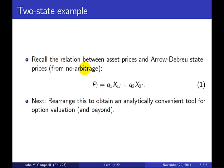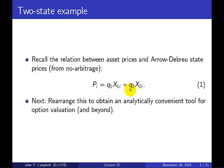Pseudo probabilities are most easily explained if we go back to a two-state example. Going all the way back to the beginning of the course in September, recall the relation between asset prices and Arrow-Debreu state prices or contingent claim prices: the price of any asset i is going to be the payoffs in the two states — x1i in state 1 and x2i in state 2 — multiplied by the state prices Q1 and Q2 for dollars to be received in each state.